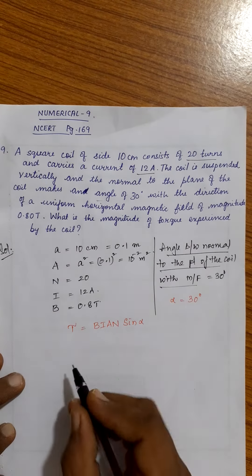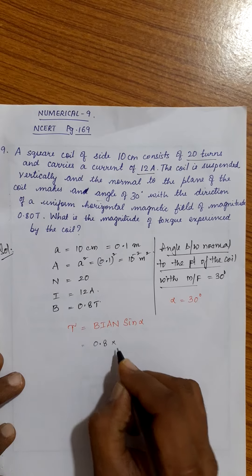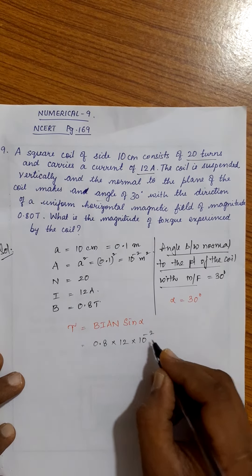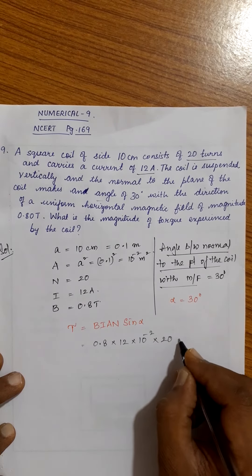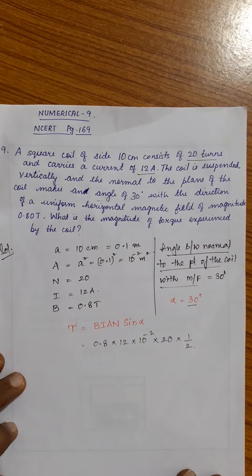Just substitute in this. Torque is equal to B, B is 0.8, I is 12, A is 10 power minus 2, N is 20, sine alpha sine 30, sine 30 is 1 by 2. Understood children?